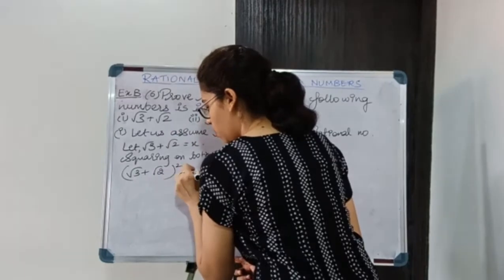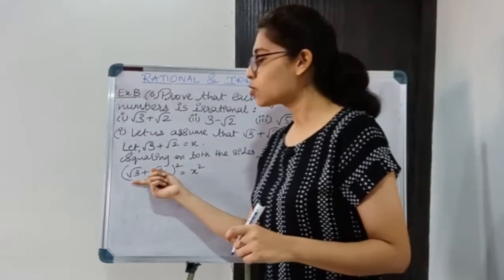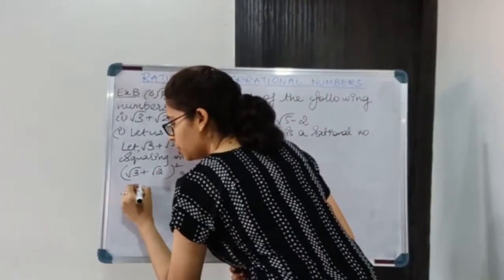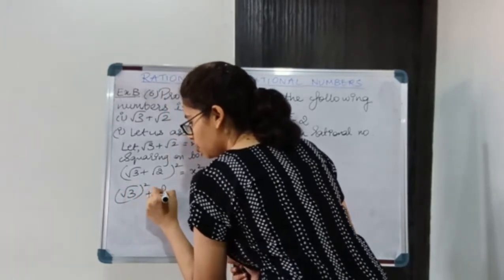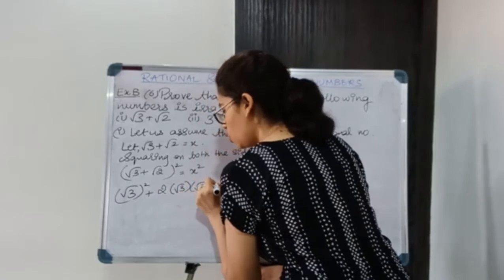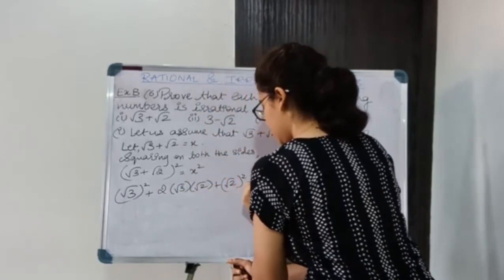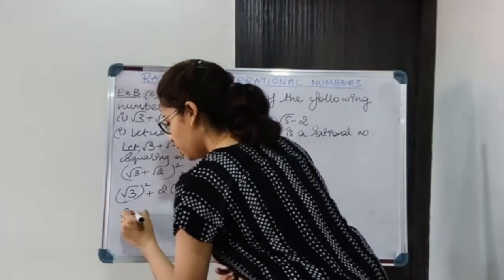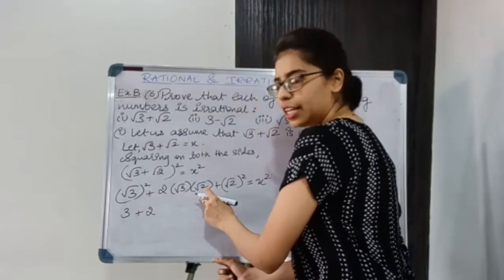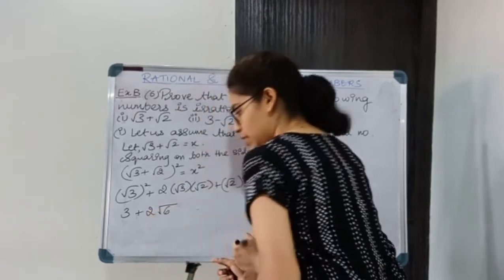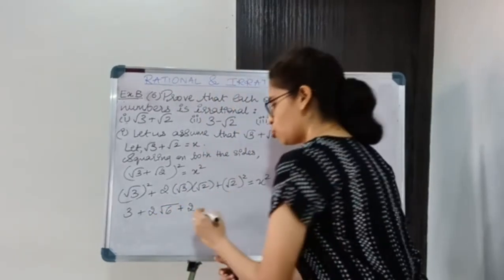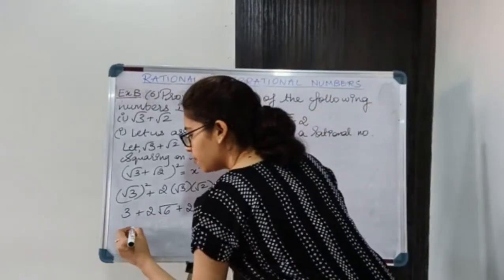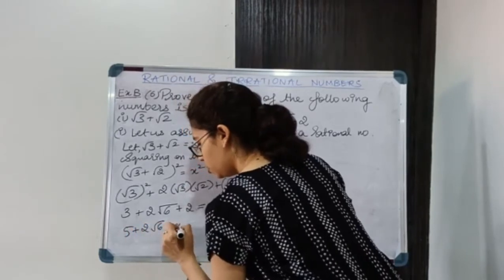The whole square is equal to x². This is of the form (A + B)². We will expand it. So we get (√3)² + 2·√3·√2 + (√2)² = x². Now (√3)² gives 3, 2·√(3×2) gives 2√6, and (√2)² gives 2. So 3 + 2√6 + 2 = x², which simplifies to 5 + 2√6 = x².